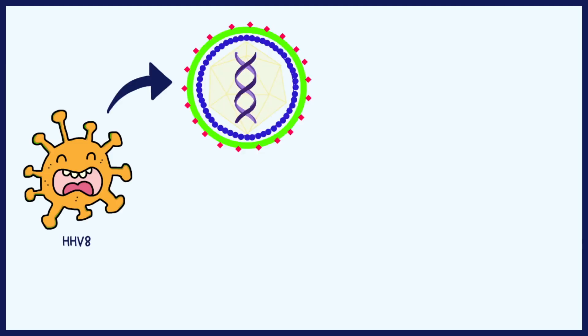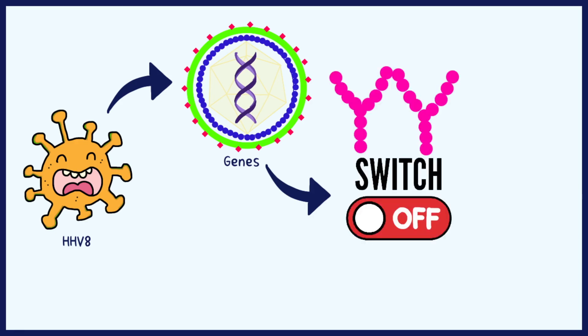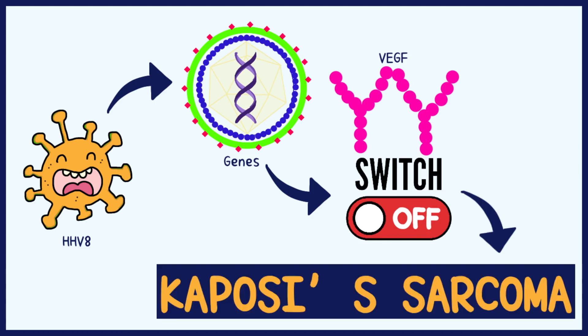HHV8 has certain genes that particularly affect the VEGF, or vascular endothelial growth factor, by switching it off. This is directly linked to Kaposi's sarcoma.